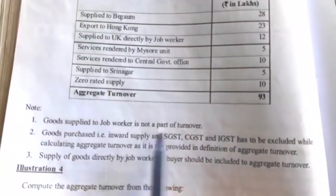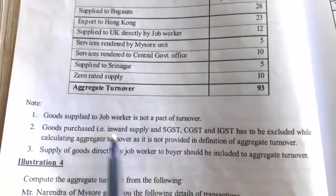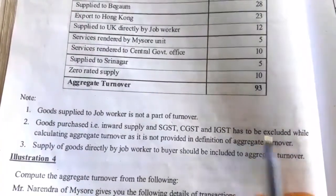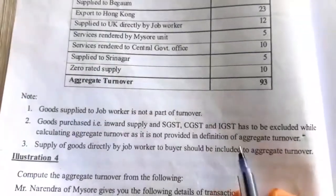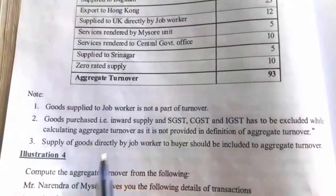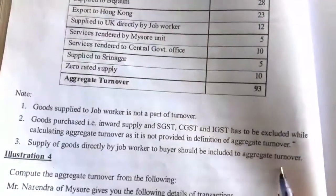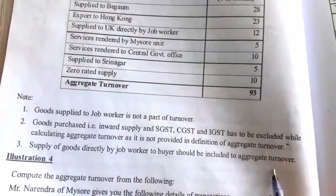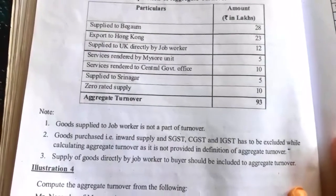Good supply to job worker is not a part of turnover. Goods purchased — that is an inward supply. SGST, CGST and IGST have to be excluded while calculating aggregate turnover, as it is not provided in the definition of aggregate turnover. Supply of goods directly by a job worker to a buyer or dealer is included in the aggregate turnover. Try to work out this illustration.